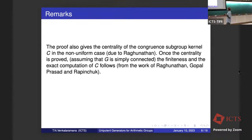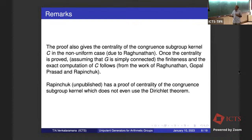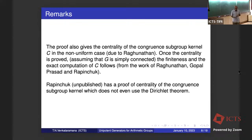This proof also gives the centrality of the congruence kernel in the non-uniform case, which was due to Raghunathan. Once the centrality is proved, assuming the extra hypothesis that the group be simply connected, the finiteness of the congruence kernel was initially proved by Raghunathan, but Gopal gave a really nice proof. The precise computation of the congruence kernel was also done by all these people. Rapinchuk told me that he has a proof of the centrality of the congruence kernel that doesn't even use the Dirichlet theorem — it's almost just some calculation in the p-adic completions.